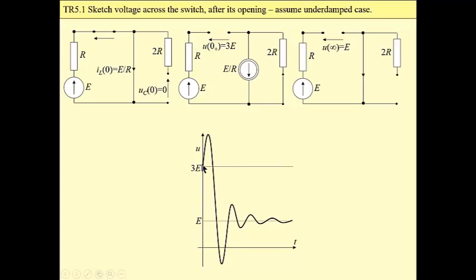As we can see, the maximum value of voltage is greater than 3E. However, it is not necessarily so. For different values of R, we may obtain also underdamped response without overvoltage over 3E.